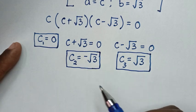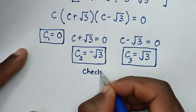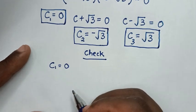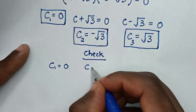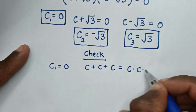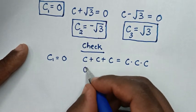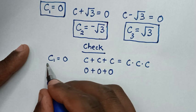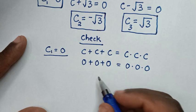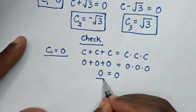Now let's check these values. For the first value c equals zero: c plus c plus c becomes zero plus zero plus zero, and c times c times c becomes zero times zero times zero. Both sides equal zero, so left side and right side are equal — confirmed.